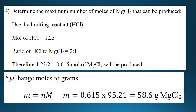The final step is to change moles to grams using the equation: mass equals number of moles times molar mass. The number of moles is 0.615 and the molar mass of magnesium chloride is 95.21, giving a total mass of 58.6 grams of magnesium chloride.